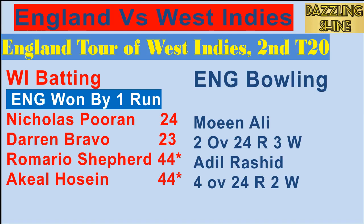First ball of the 18th over, Jordan to Hosein — Hosein frees his arm in the slot and smokes it over cover for six. Very next ball, Hosein is dropped by Morgan who was back-pedalling trying to take the catch. Then Shepherd goes over deep mid-wicket for a massive six. Fourth ball, Jordan to Shepherd — a back-of-length ball and it's a fantastic pull, gone all the way for six. That's three sixes in the over.